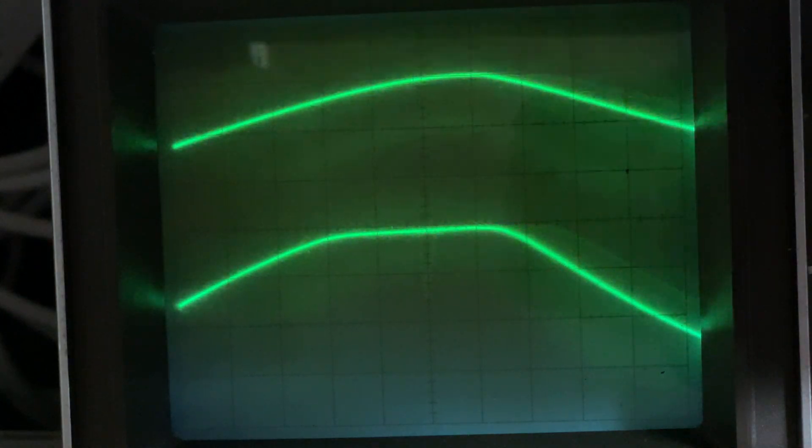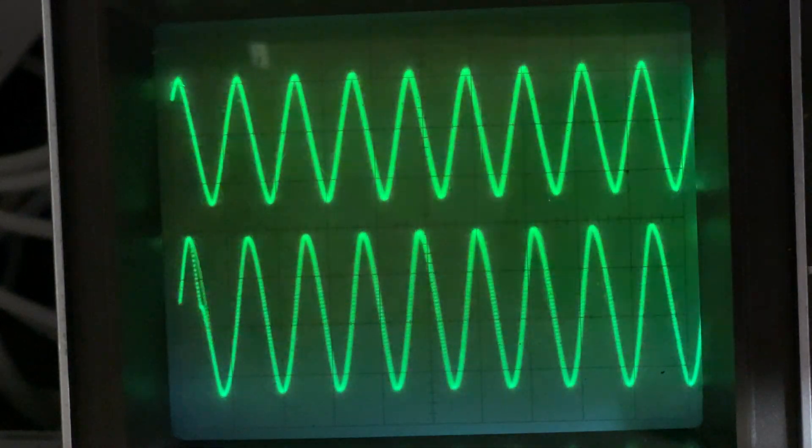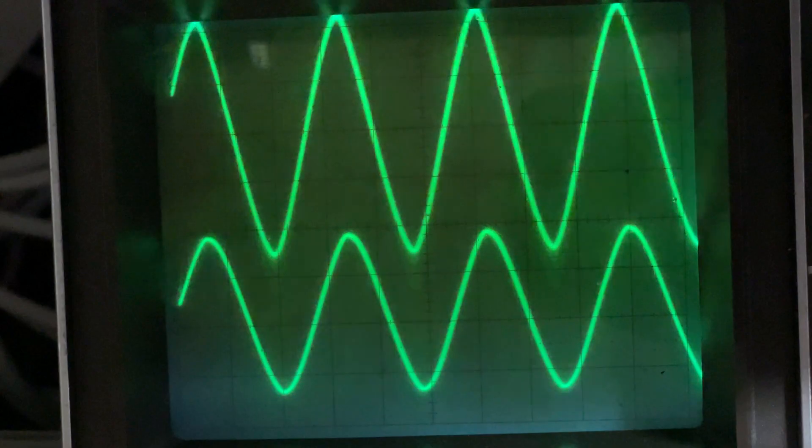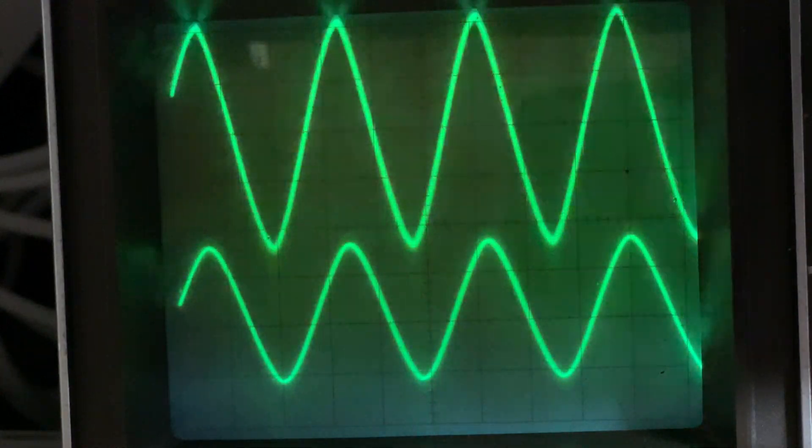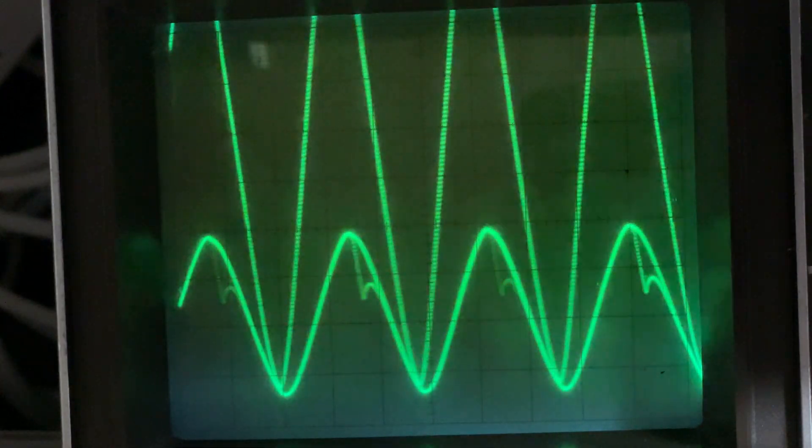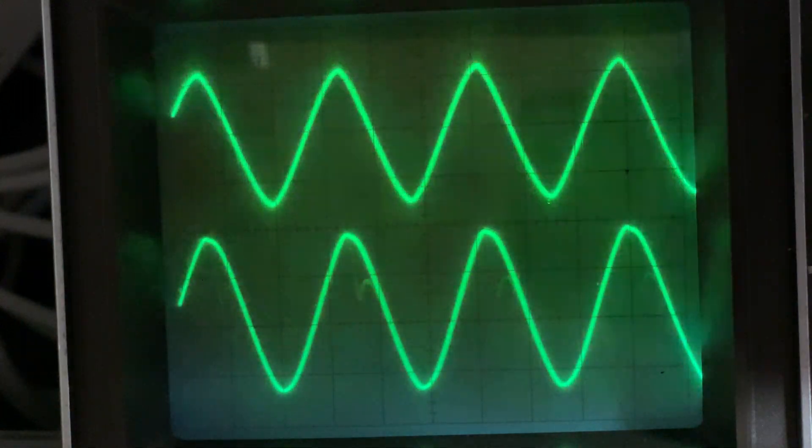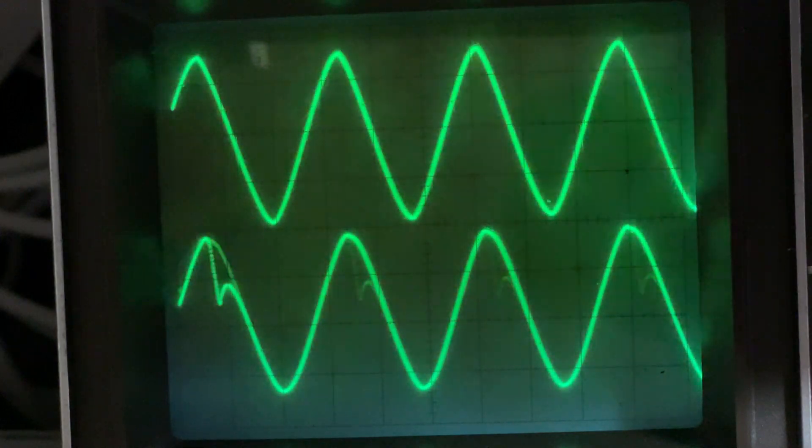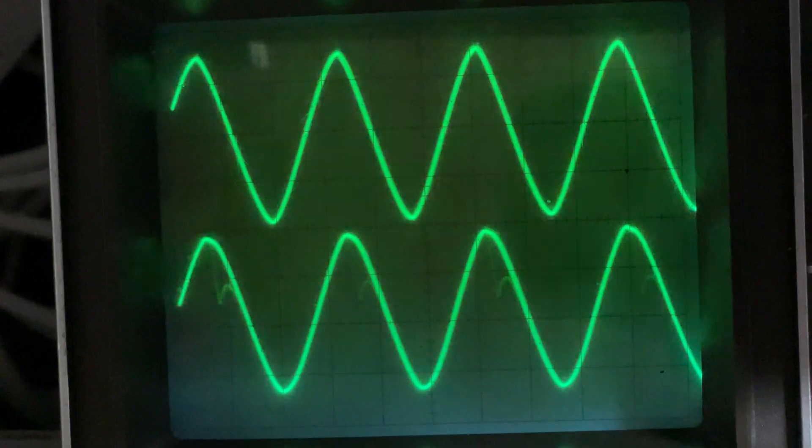Anybody knows what that is? Leave a comment. Maybe we can get rid of it. Who knows? But AGC circuit seems to be working nicely. It does bounce a little bit if you shift the level too quickly, but if you move the level uniformly, the level stays the same on the output. Excellent.